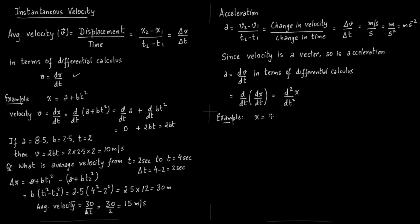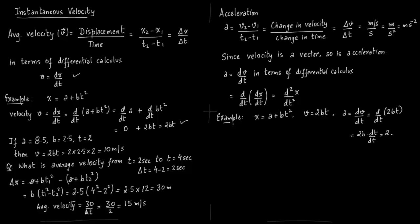For example, if x = a + bt squared, velocity is dx/dt = 2bt. To find acceleration, we take dv/dt = d/dt of 2bt. Since 2b is a constant, it comes out, and d/dt of t is just 1, so the acceleration is 2b.